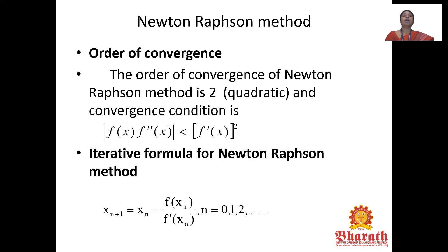In Newton-Raphson Method, the order of convergence is 2 — that is, it is quadratic. The convergence condition is that the modulus of f(x) times f''(x) must be less than [f'(x)]².